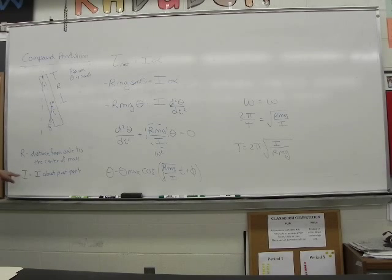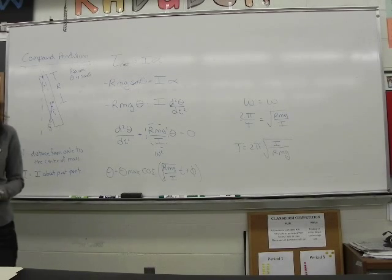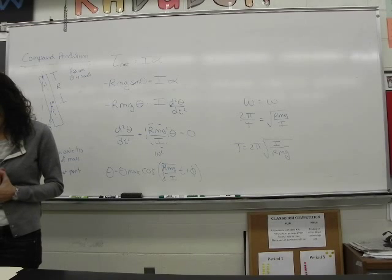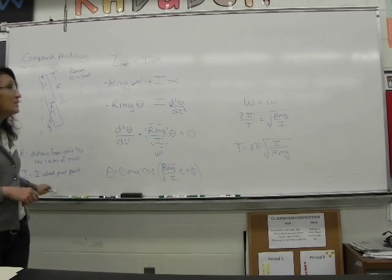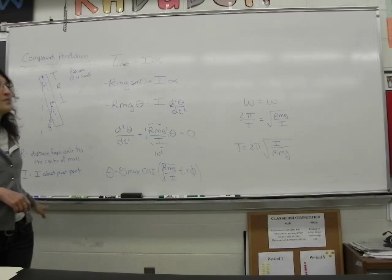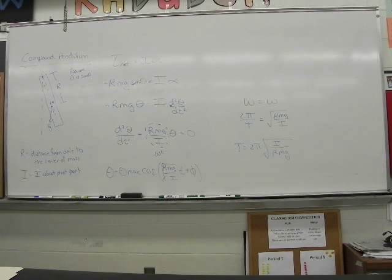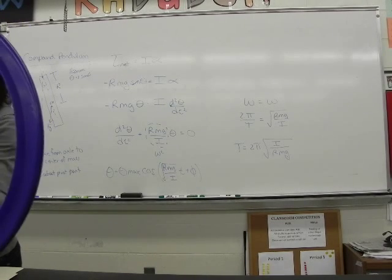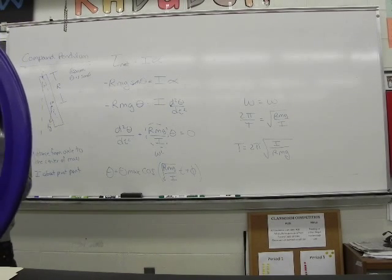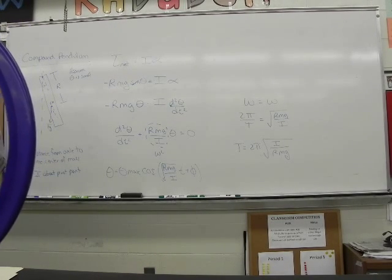The I is about the pivot point and R is the distance from the center of mass. Let's take a five-minute break and then we're going to come back, have you predict the period of this, and then look at some AP problems. Unless you don't want to take a break — we'll keep going. I need a break. I figured most people would need a break.